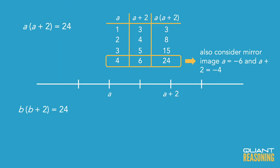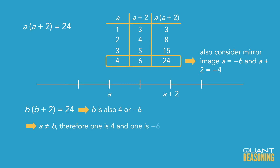Then we read on and it turns out the exact same is true of B. So B is also either 4 or negative 6, but then they tell us that A is not equal to B. So what does that tell me? One of them is 4 and the other is negative 6. I don't know which one is which. But as I continue to read the question, they're just asking for the sum. And if all I want to know is the sum of A and B, I don't actually care which is which. What's the sum of 4 and negative 6? It's negative 2.